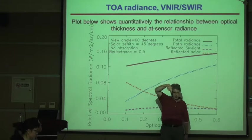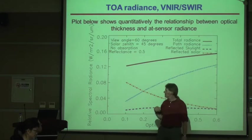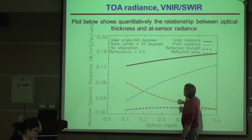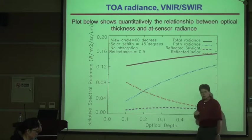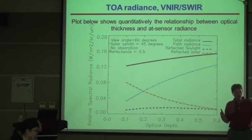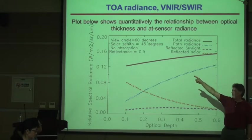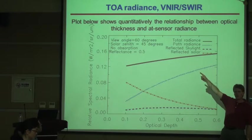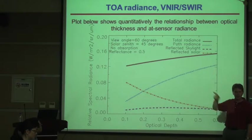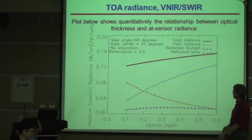The view angle is 60 degrees, so it's looking off to the side at 60 degrees; the zenith angle is 45 degrees. As I mentioned yesterday, I will often just use 45 degrees because it doesn't matter if you're looking up at 75 or horizontal to 45 — it's the same. So even if there's a confusion in terminology, it goes away with the 45-degree sun angle.